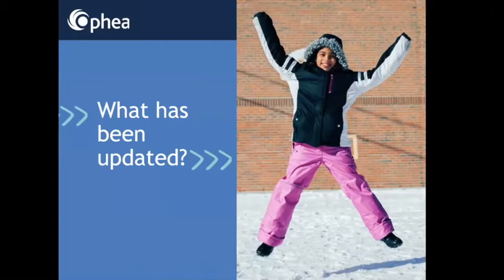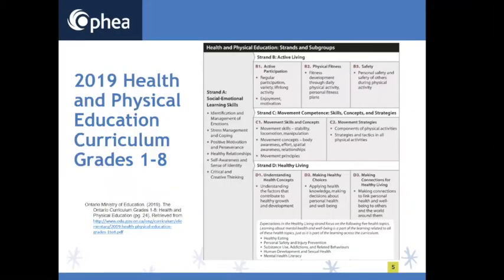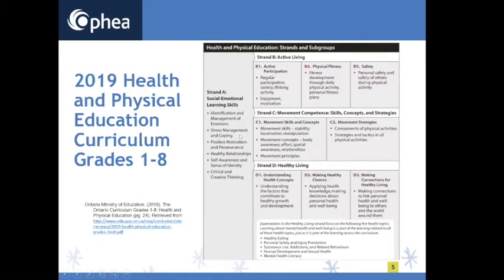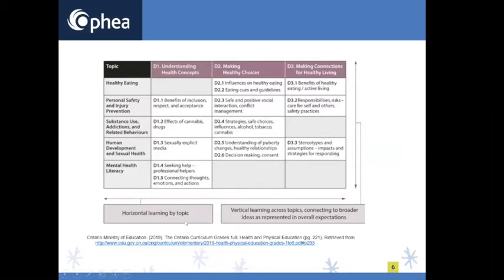For those joining for the first time, I'll revisit quickly. These are our strands. We talked about the social-emotional strand as the umbrella strand — what's new. We talked about creating a community and an inclusive classroom, how to be responsible and respectful of others. These skills are embedded throughout your active living, movement competence, and healthy living strands, and finding ways to make sure you are creating a safe environment for students.